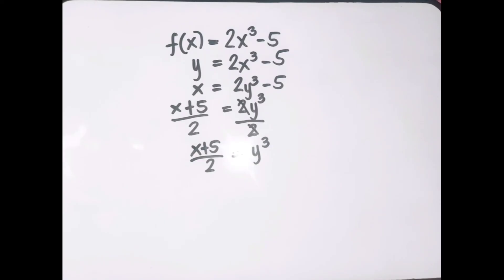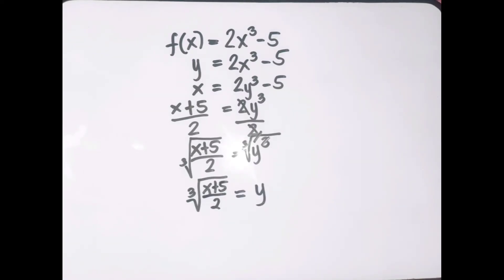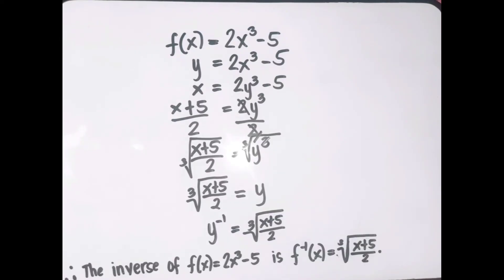Next, let us eliminate the power 3 or cube by taking the cube root of both sides. The power 3 and cube root on the right side will be cancelled, giving us the cube root of x plus 5 over 2 equals y. Therefore, the inverse of the function 2x cubed minus 5 is the cube root of x plus 5 over 2.